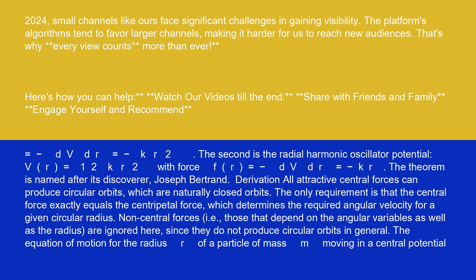Derivation: all attractive central forces can produce circular orbits, which are naturally closed orbits. The only requirement is that the central force exactly equals the centripetal force, which determines the required angular velocity for a given circular radius. Non-central forces, i.e., those that depend on the angular variables as well as the radius, are ignored here since they do not produce circular orbits in general.